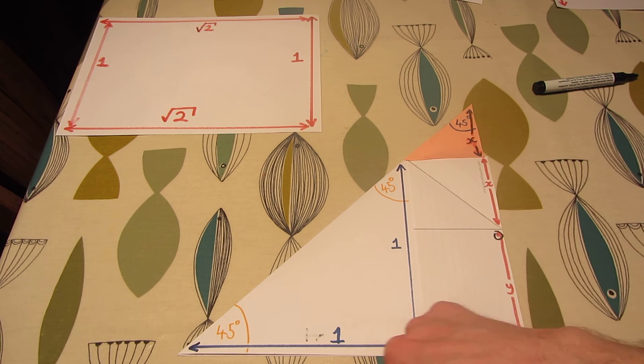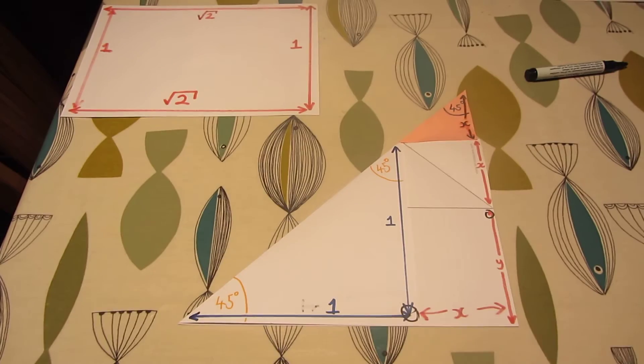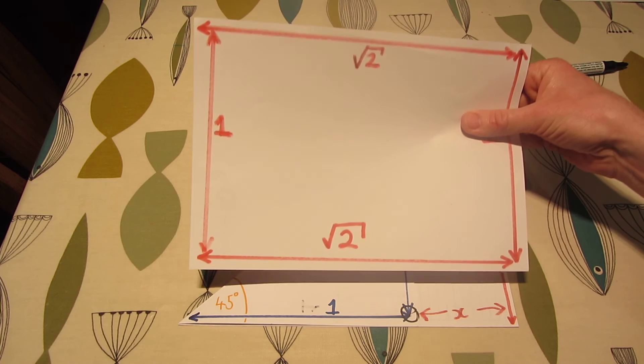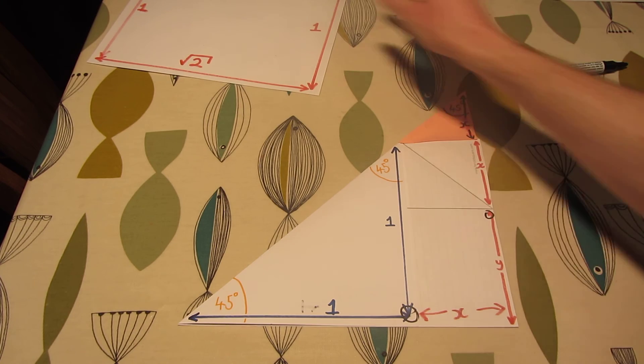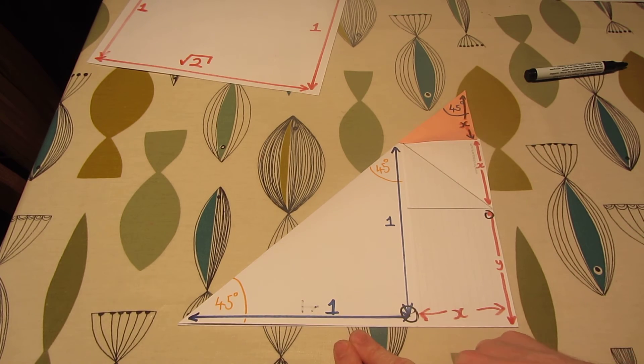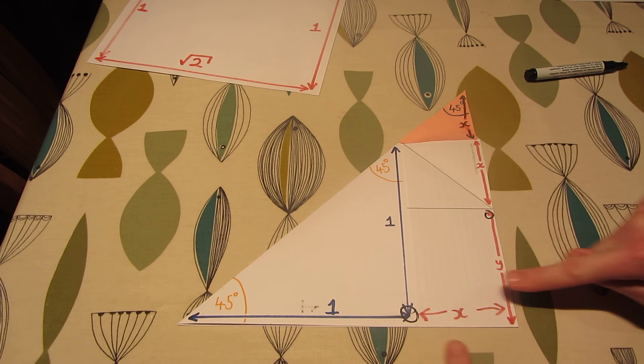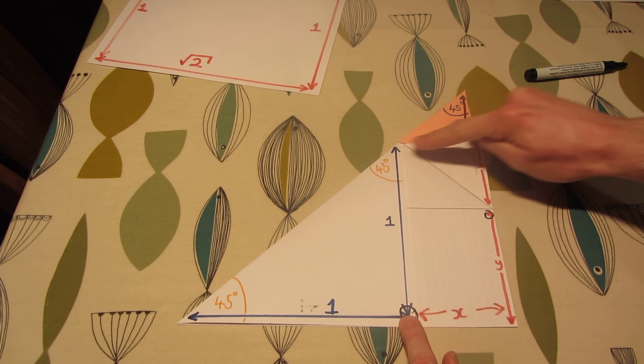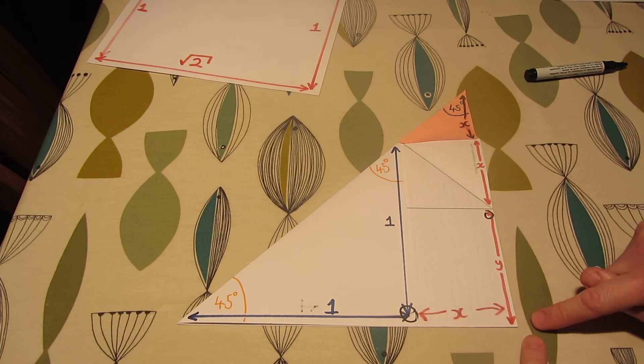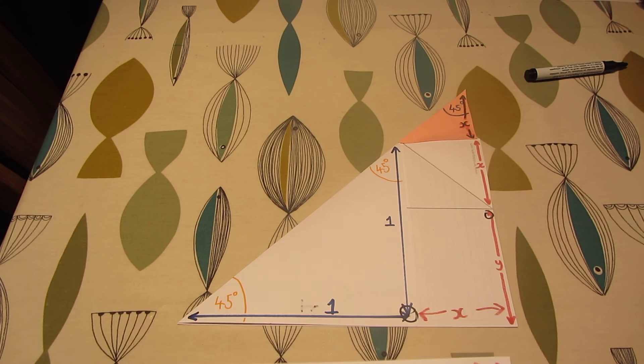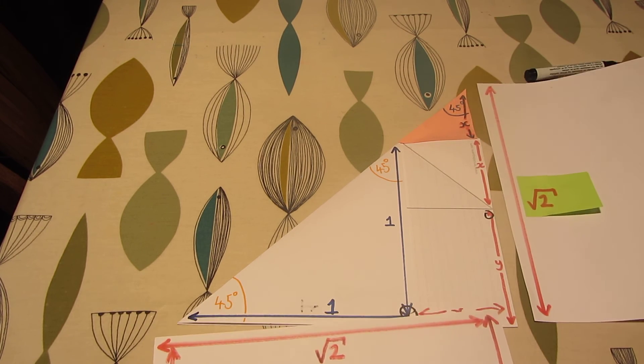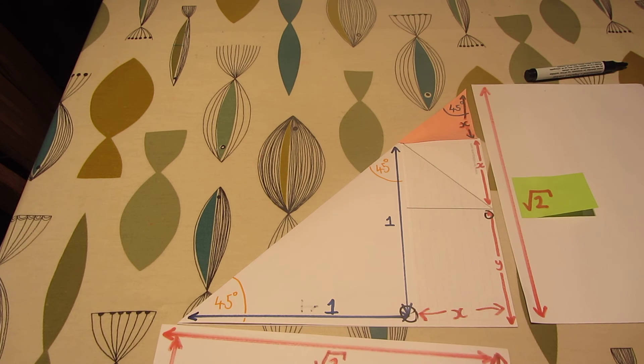We already know that the bottom line, shuffle the camera back, the bottom line here is root two. Remember, that's the full width of the piece of paper, root two. We also know it equals one plus x. Now we know that this length, all the way up to this top corner now, is the same length. It's one plus another x. So this side is root two. So we've got root two down the bottom, and root two at the side of a right-angled triangle.